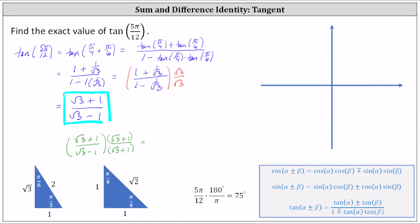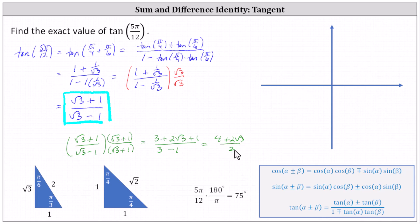Multiplying gives us four products in the numerator and denominator. In the numerator: square root three times square root three is three, plus square root three times one is square root three, plus one times square root three is another square root three, giving plus two square root three, and then plus one times one, which is one. In the denominator: square root three times square root three is three; the next two products, positive square root three and negative square root three, cancel out; and negative one times one gives minus one. Simplifying, we have four plus two square root three all divided by two, which equals four divided by two plus two square root three divided by two, giving us two plus square root three.